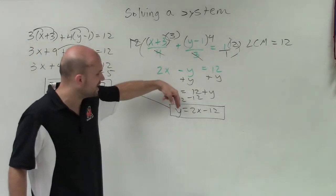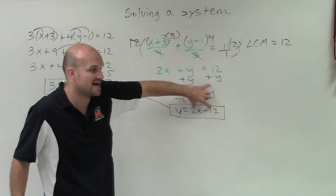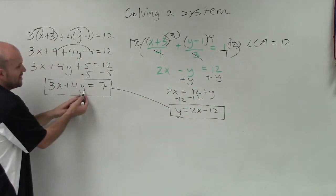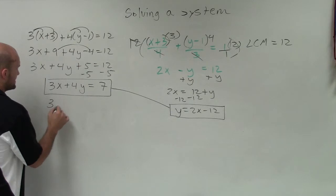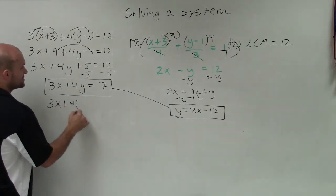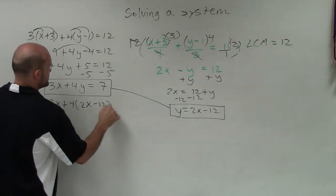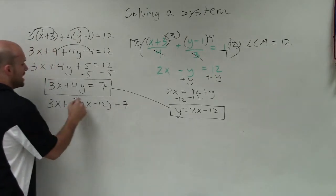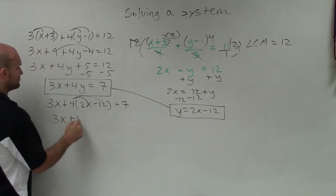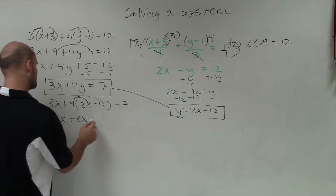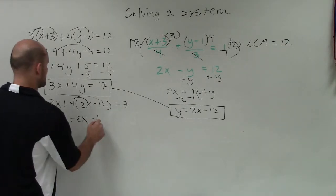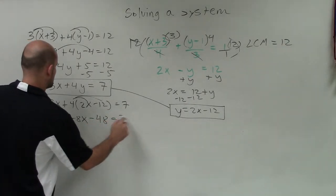That means now that I have y isolated, I'm going to plug in the value of y in for the value of y in this equation. So therefore I obtained 3 times x plus 4 times 2x minus 12 equals 7. Now I apply distributive property again, and I get 3x plus 8x minus 48 equals 7.